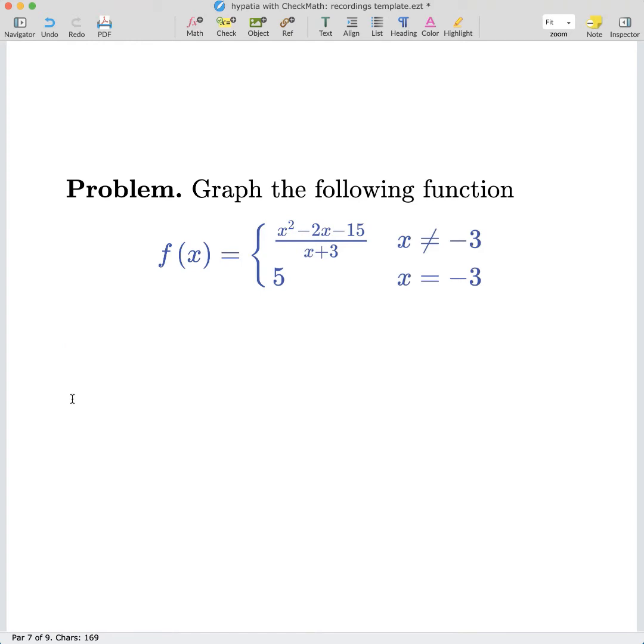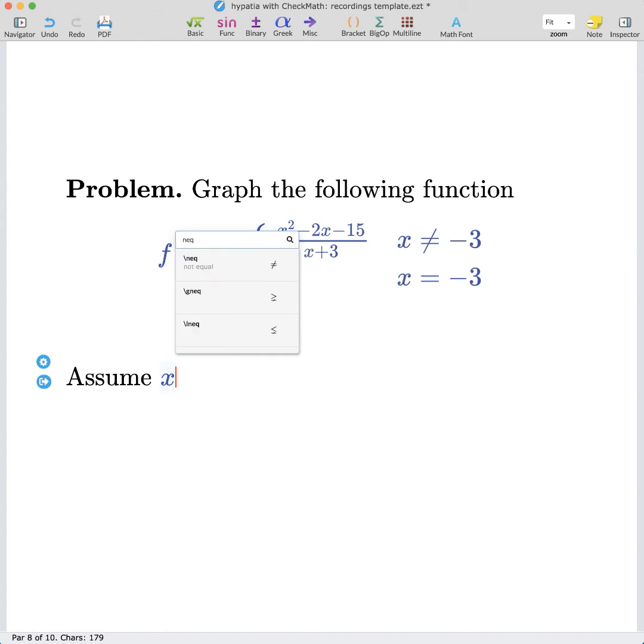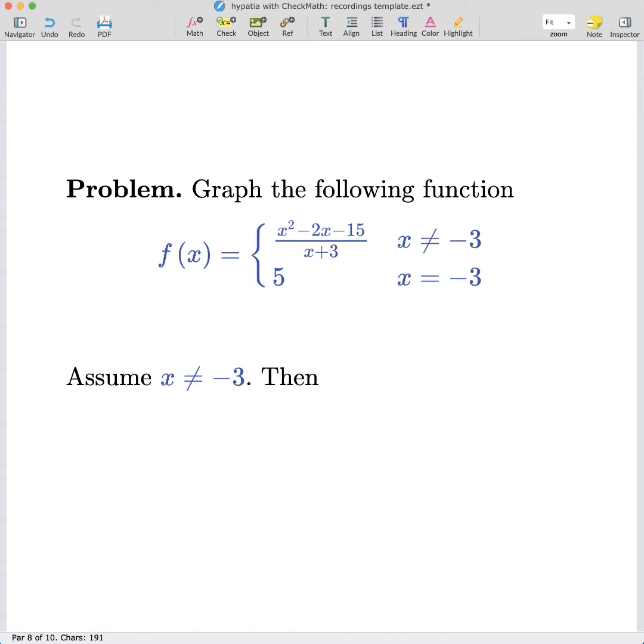Now the first step we can try is to simplify that big fraction we have. We can try and factor the numerator. To do this we have to assume that x does not equal negative 3 as is shown in the case. So we can write our assumption, and then we can do the simplification using CheckMath.